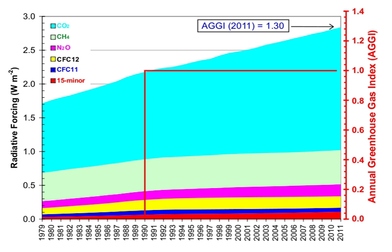Some greenhouse gases remain in the atmosphere for decades or even centuries, and therefore can affect Earth's energy balance over a long period. Radiative forcing quantifies the effect of factors that influence Earth's energy balance, including changes in the concentrations of greenhouse gases. Positive radiative forcing leads to warming by increasing the net incoming energy, whereas negative radiative forcing leads to cooling.